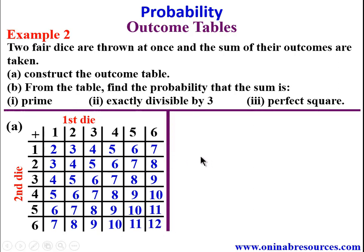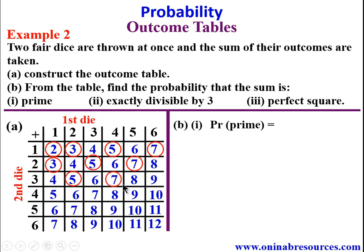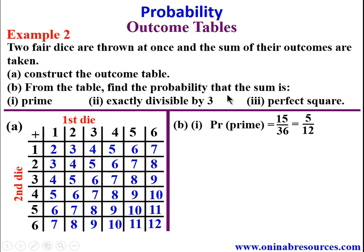For B1, the probability of getting a sum that is prime: we go to the outcome table and look for all prime numbers. 2, 3, 5, 7, 11 are prime. Counting all prime entries: 1, 2, 3, 4, 5, 6, 7, 8, 9, 10, 11, 12, 13, 14, 15 — we get 15 prime sums. The probability is 15/36, which simplifies to 5/12.